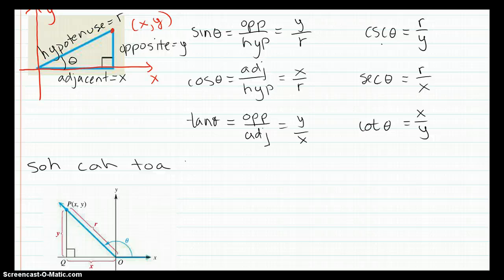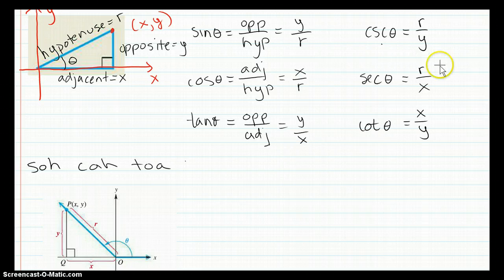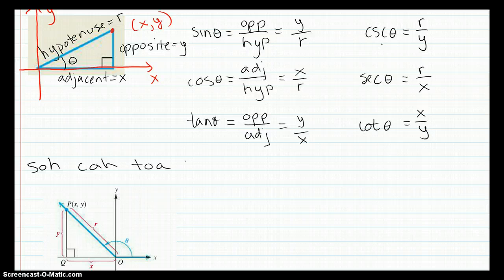And the definition of the six trigonometric functions are the same. Sine of theta is going to be y over r, cosine x over r, tangent y over x, and cosecant, secant, and cotangent are going to be the same as well. And we still have a right triangle there.